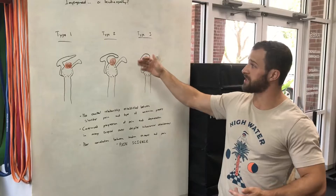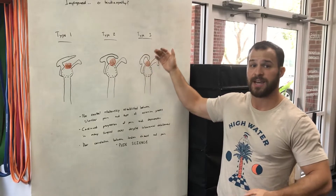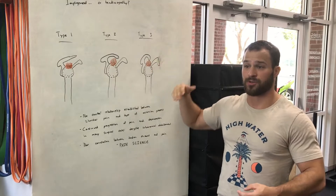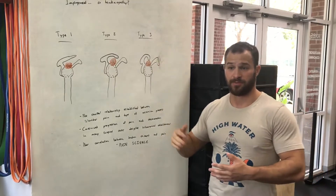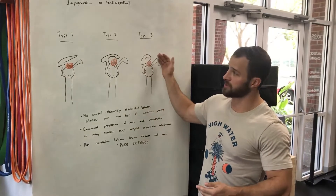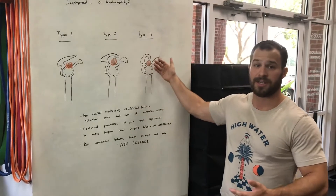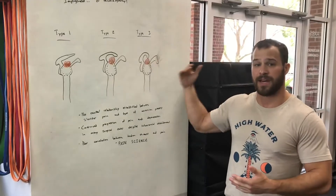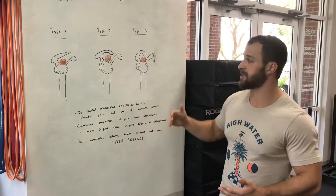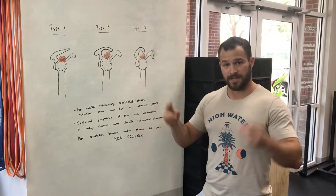The problem is that in reality, the research doesn't really support this idea. There is a slightly increased incidence — a small correlation between type 2 and type 3 acromion processes and shoulder pain — but it hasn't been proven to be a causal relationship yet.